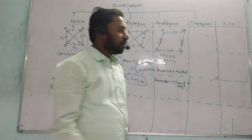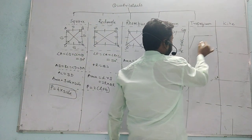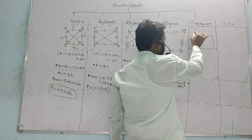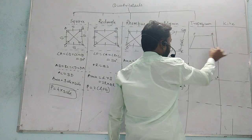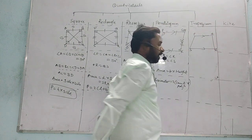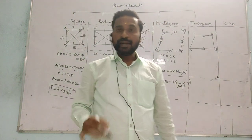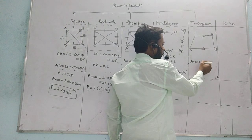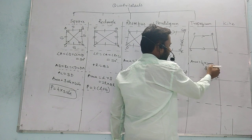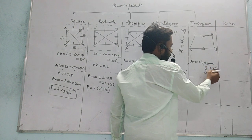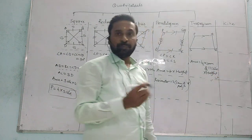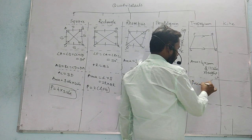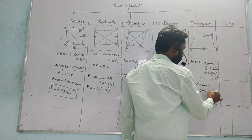Next is trapezium. For trapezium PQRS, we can say that it is a quadrilateral where one pair of sides is parallel. Area of a trapezium is half into the sum of parallel sides into height. And the perimeter is the sum of all sides.